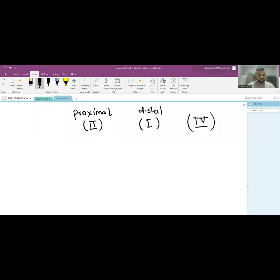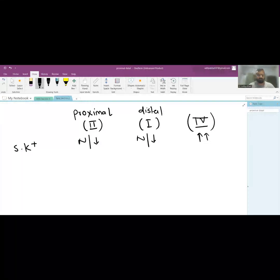The first thing is serum potassium. In proximal RTA, serum potassium is either normal or decreased. In distal RTA, it is the same—normal or decreased. In type 4, it is increased due to hyperaldosteronism.